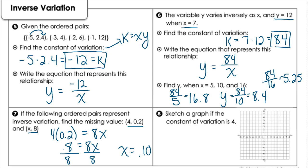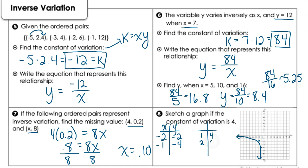For number eight, let's sketch a graph where the constant of variation is 4, meaning y equals 4 over x. Plugging in easy values: 4 divided by negative 2 is negative 2; 4 divided by negative 1 is negative 4. On the positive side: 4 divided by 1 is 4; 4 divided by 2 is 2; 4 divided by 8 is one-half. The left side curves one way and the right side curves back, giving us our inverse variation graph.